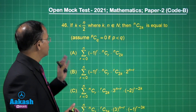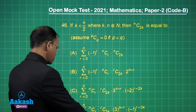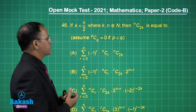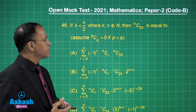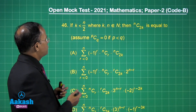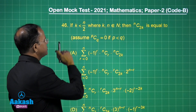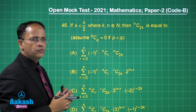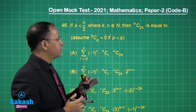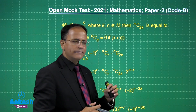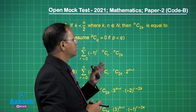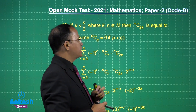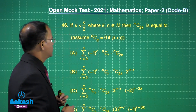Let us talk about question number 46. The problem states: if k is less than n/2, where k and n belong to the natural numbers, then nC2k is equal to what? Assuming pCq equals 0 when p is less than q.